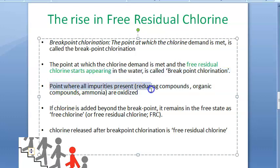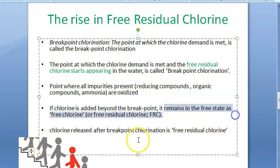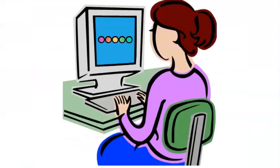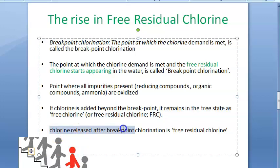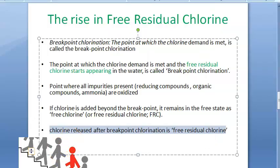The breakpoint indicates the point where all impurities, reducing compounds, organic compounds, and ammonia are all oxidized. Beyond this point, chlorine added remains in the free state as free residual chlorine (FRC). So chlorine released after breakpoint chlorination is free residual chlorine — as simple as that.